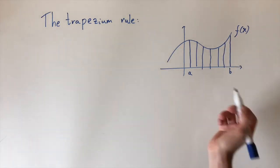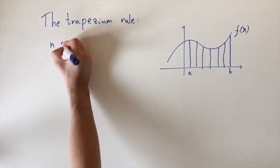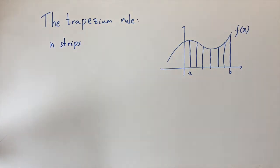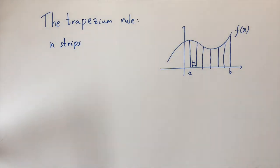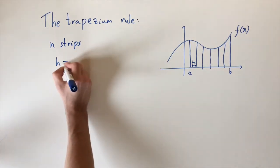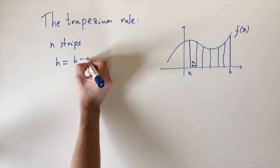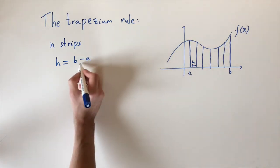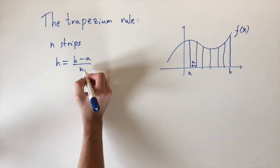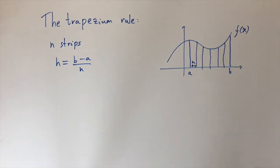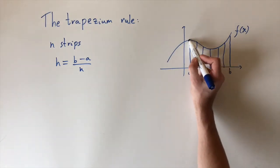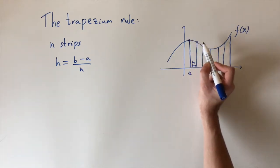Let's say we take n strips, n strips or n trapezia, and let's say they have width h. So the width is given by the length of the total interval, which is b minus a, divided by the number of strips we have. So b minus a divided by n. And these are all uniform, so they all have the length h.